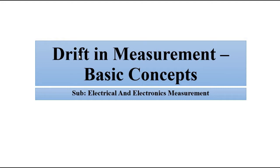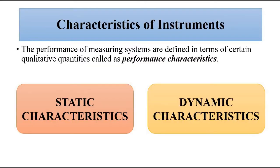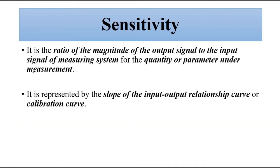In this video we are going to discuss another static performance characteristic related to the input-output relationship of the instrument or measuring system, which is called drift. Drift is a static characteristic which remains constant over a period of time or changes very slowly with respect to time. Before discussing drift, we need to touch upon the concept of sensitivity, which is basically the ratio of output to input — the change in output brought about by a certain change in input.